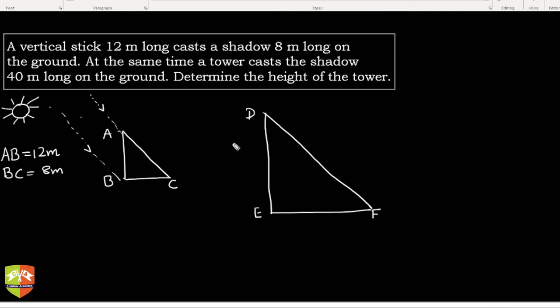40—what is 40? The shadow, 40 meters long. So EF is 40 meters long. We have to find out the height, correct. Now if you see, this is a very practical problem.